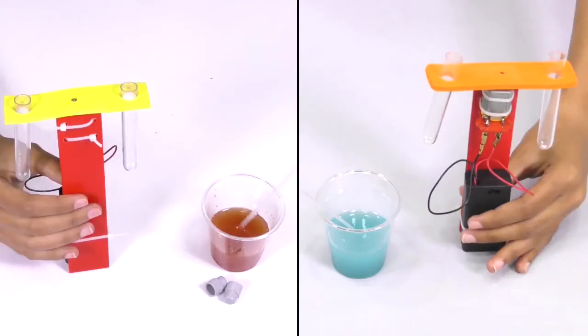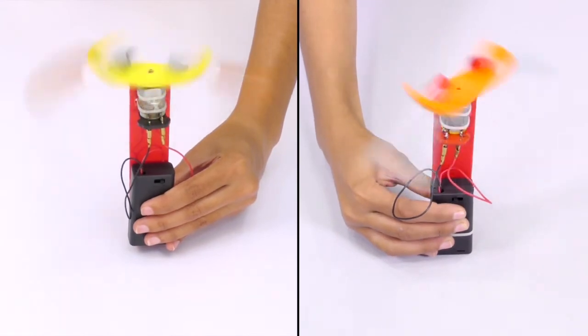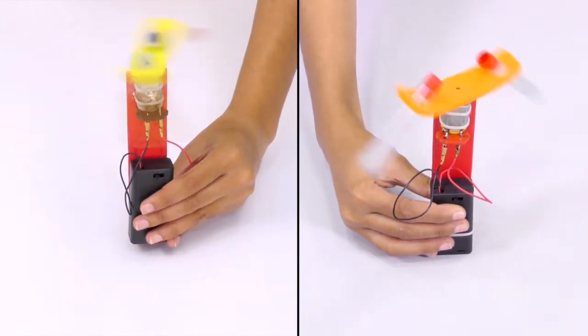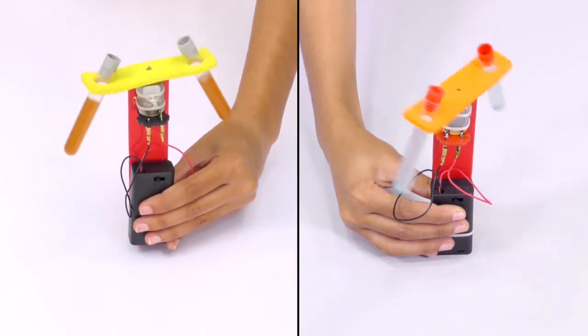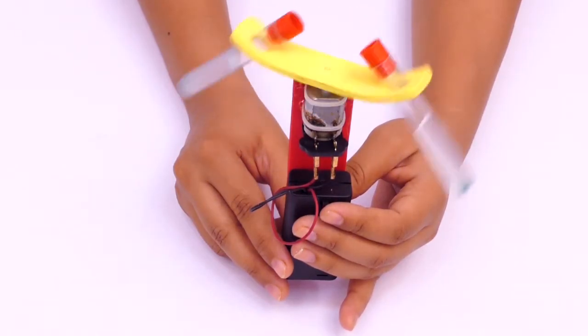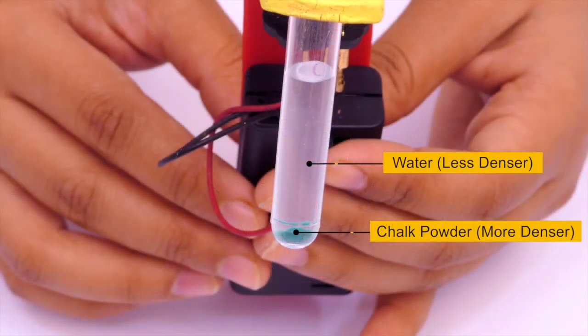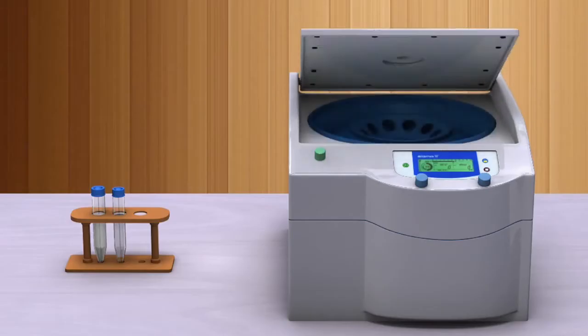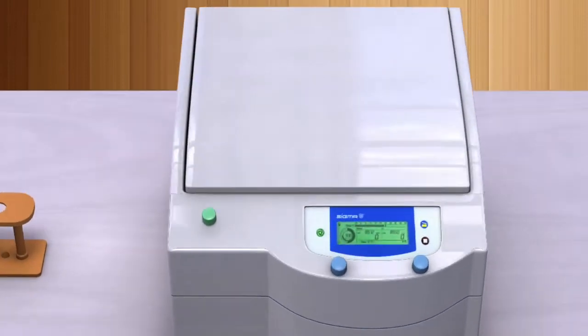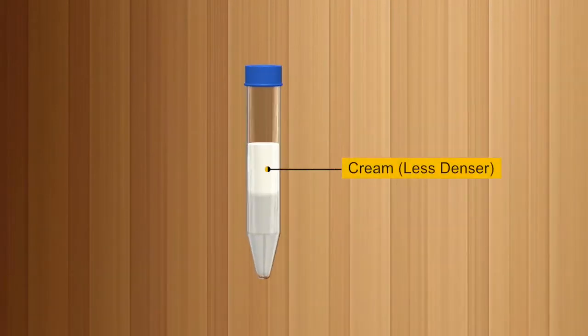In a solution, a centrifuge utilizes the difference in the densities of the solute and the solvent to separate. A centrifuge is based on the principle of the application of centrifugal force which forces the high density particles outwards. Thus, if the solute has more density than the solvent, it will settle at the bottom after centrifugation. If the solute has less density than the solvent after centrifugation, it will float on top of the solvent.